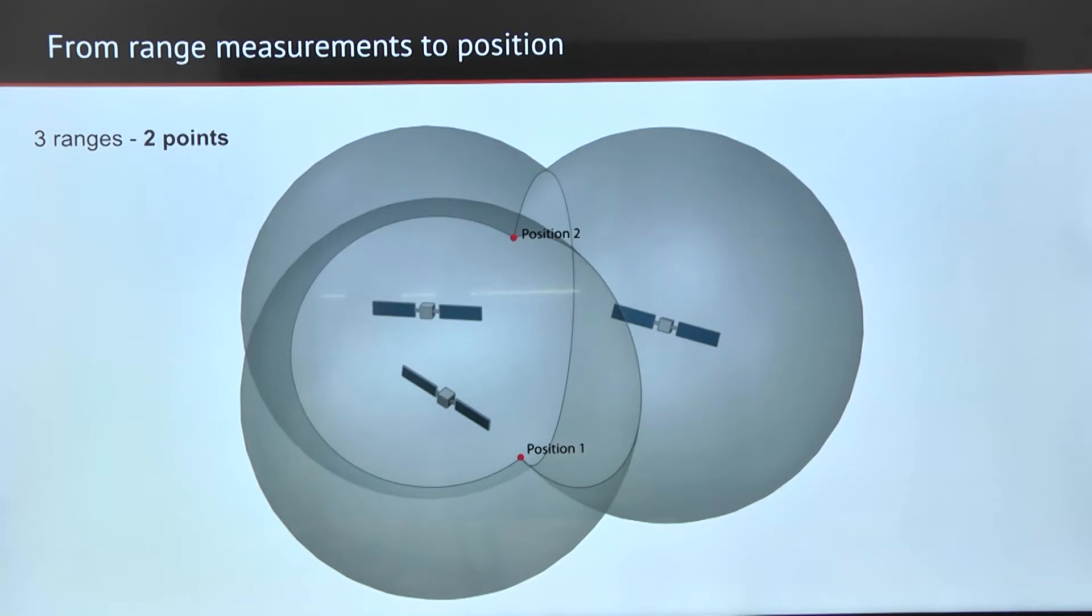But if we measure from three different satellites, we can be in two possible positions. Normally, one is possible on the Earth and the other one is impossible in space or below the Earth's surface. Three ranges are enough to determine our position.